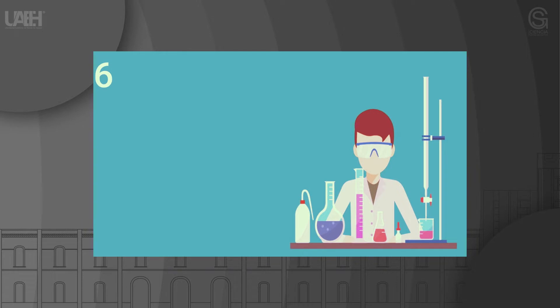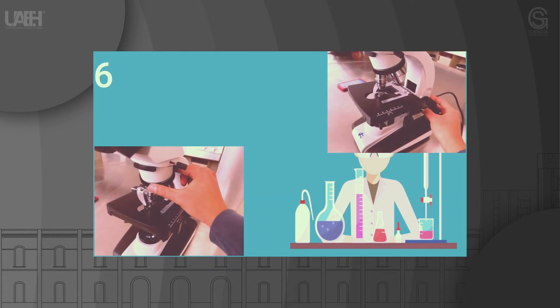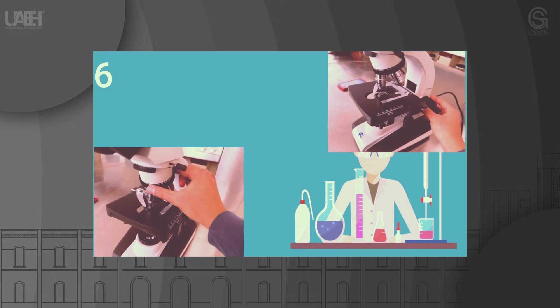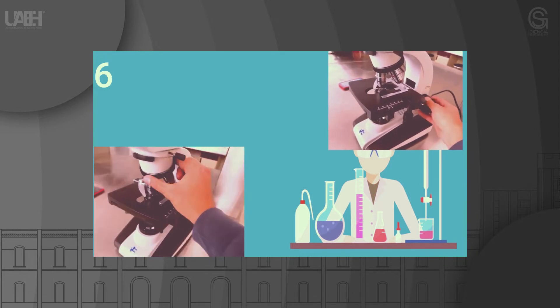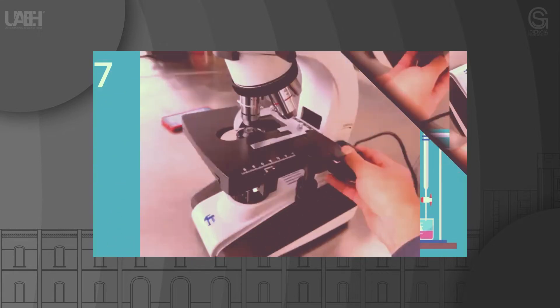Step 6: Adjust the coarse screw again to increase the distance between the sample and the objective while looking through the eyepiece. Gently move the screw until you detect the point where your sample image comes into focus.